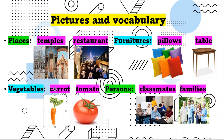So what is this one? Temple. This is the place you go especially when you are Buddhist. You always go to the temple. This is a sacred place where you can pray or where you worship your God.